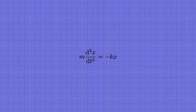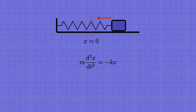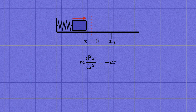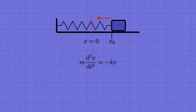Let me quickly remind you where this differential equation comes from. Our setup is a block of mass m sitting on a frictionless table, hooked up to a spring of stiffness k. In equilibrium, the spring isn't stretched or compressed, and the block can sit happily at rest there — let's call that position x equals zero. But if we slide the block away from there, the spring will now exert a force, minus kx, trying to pull the block back toward equilibrium. Then the f equals ma equation is simply m times the second derivative of x equals the force minus kx.